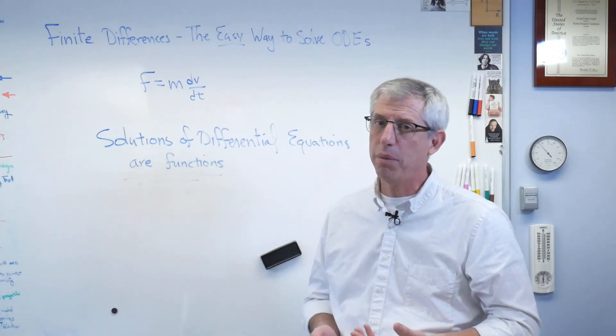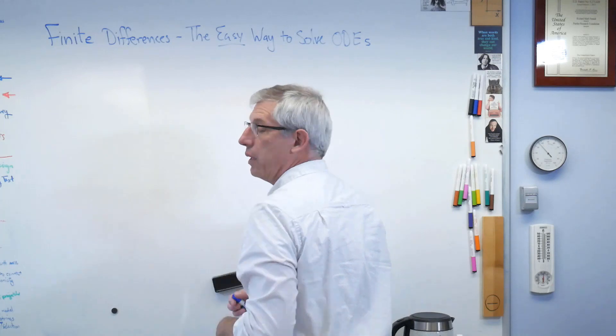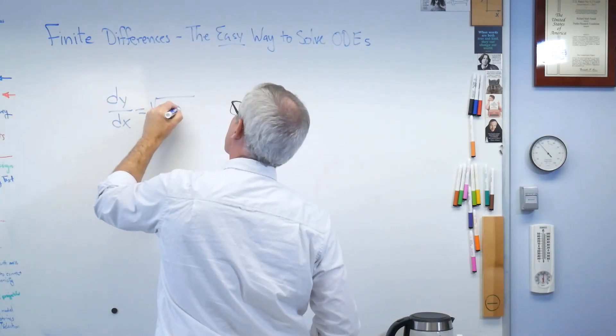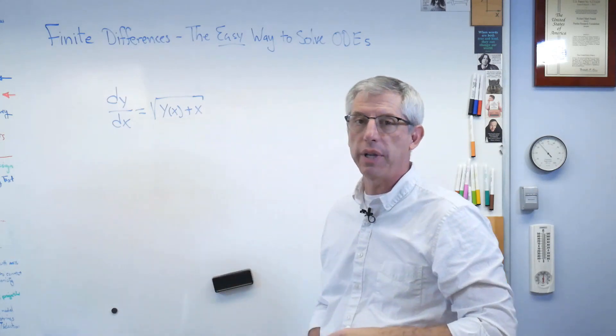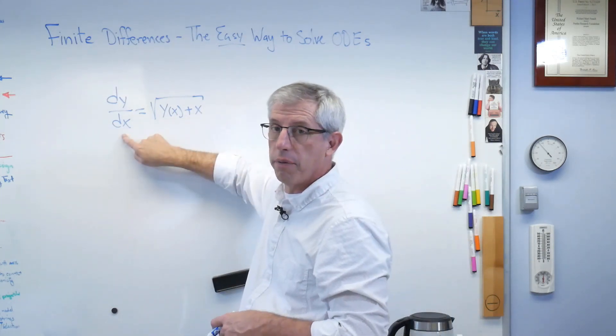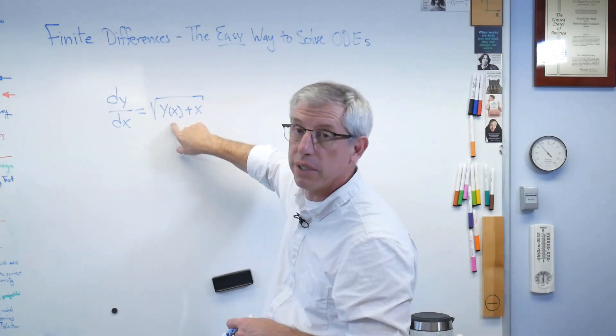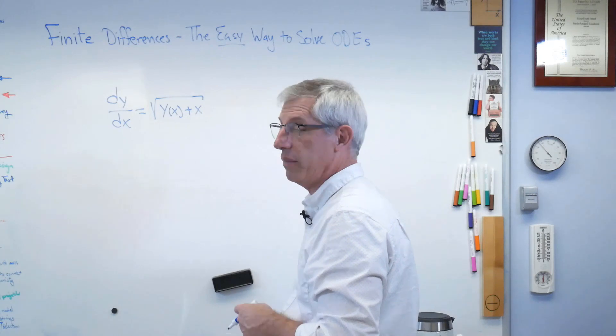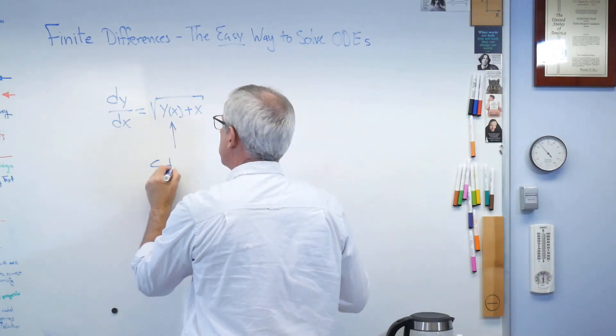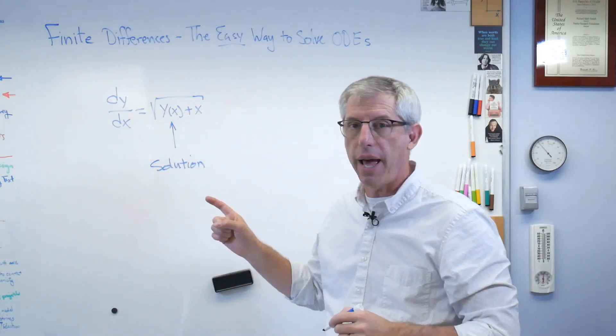So, if we're going to do this, it probably helps to have a differential equation to start with. So I just made one up. Now, I don't know if this has any physical significance, but the big idea here is the slope of the function that solves the differential equation is equal to the square root of the function itself plus x. That's it. Y of x, that thing right there, that's the solution. What we're trying to do is find that.